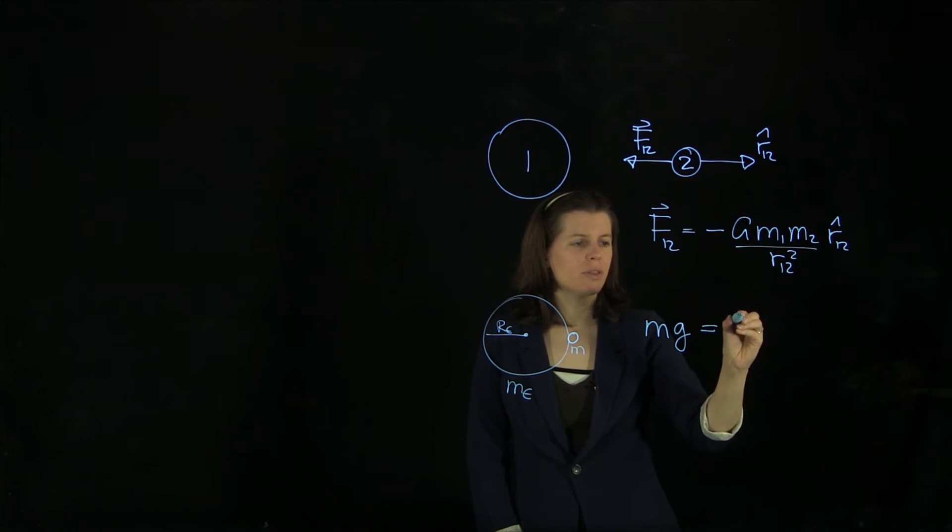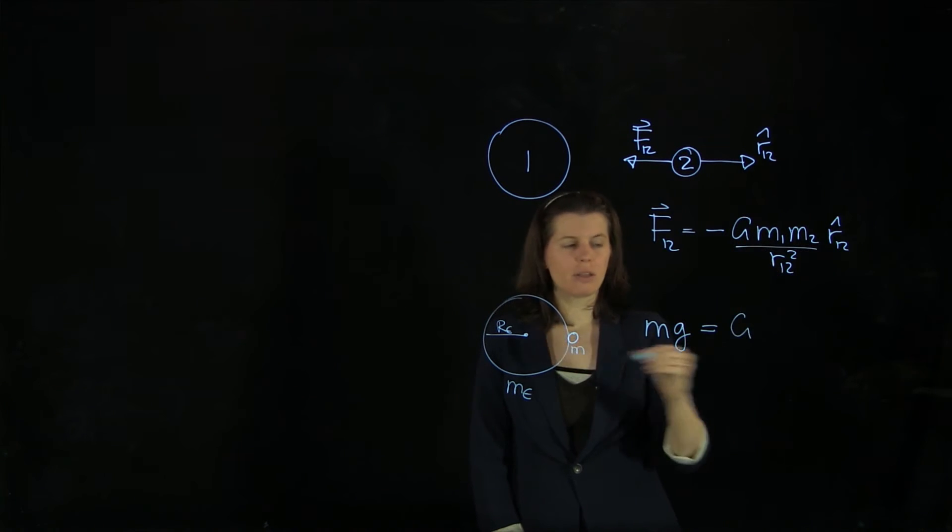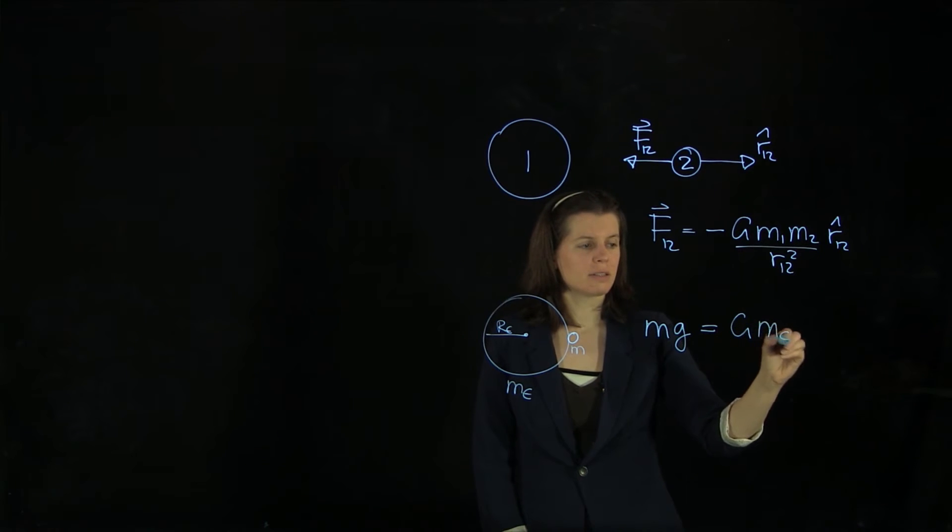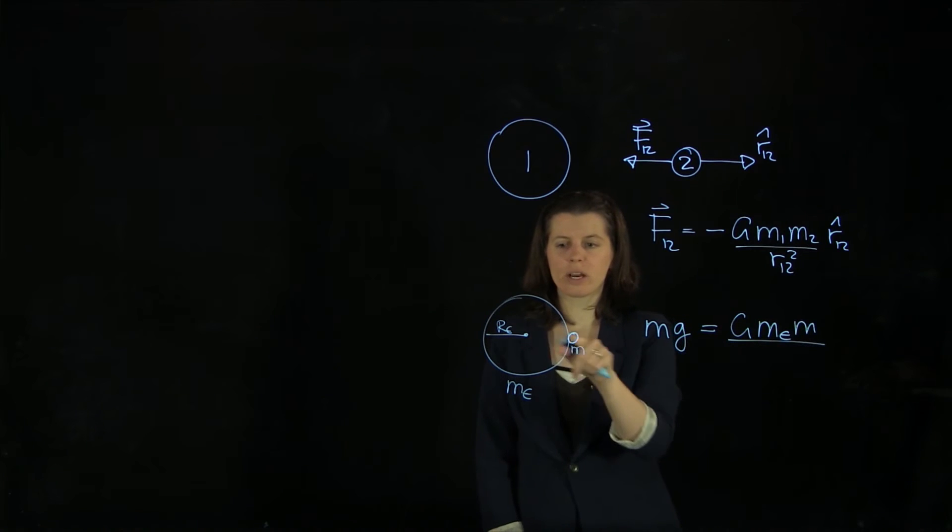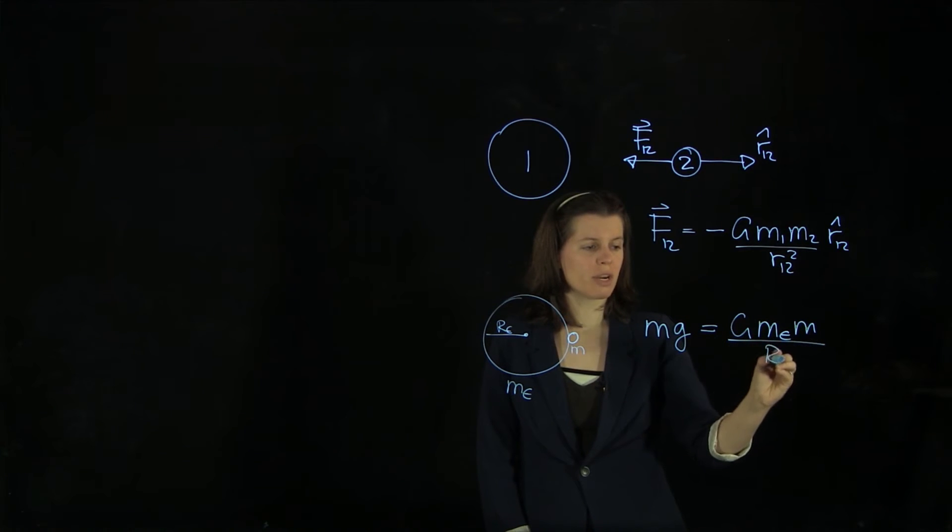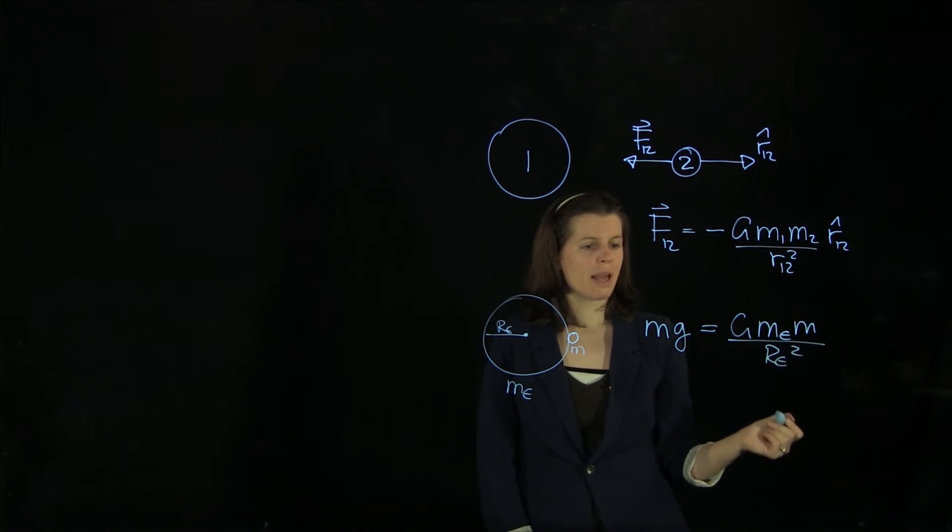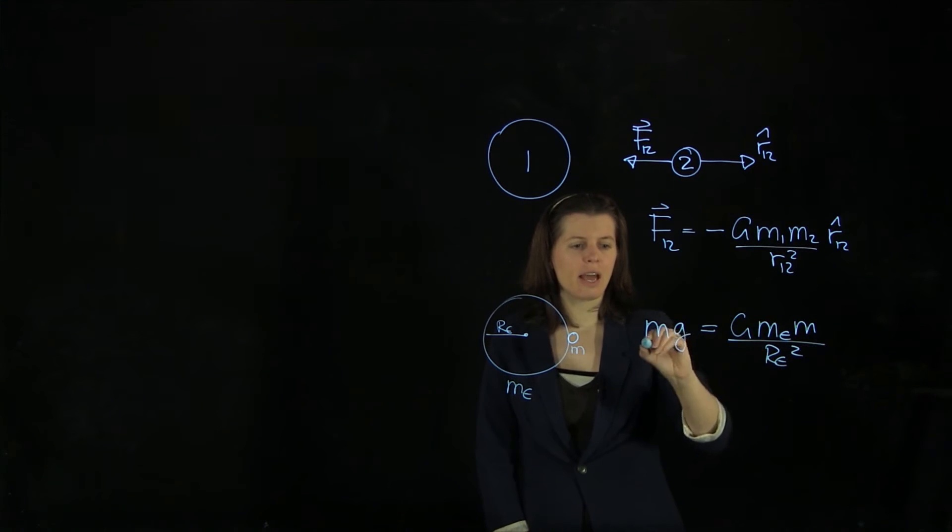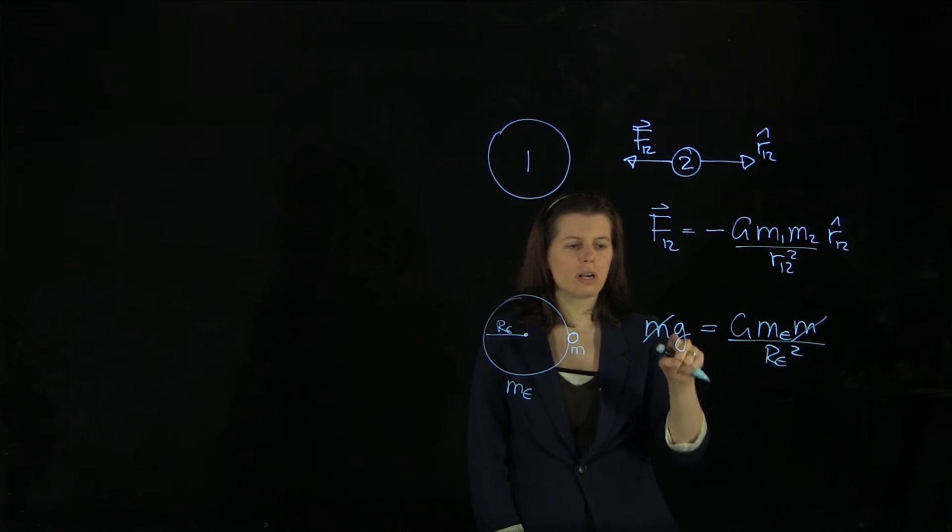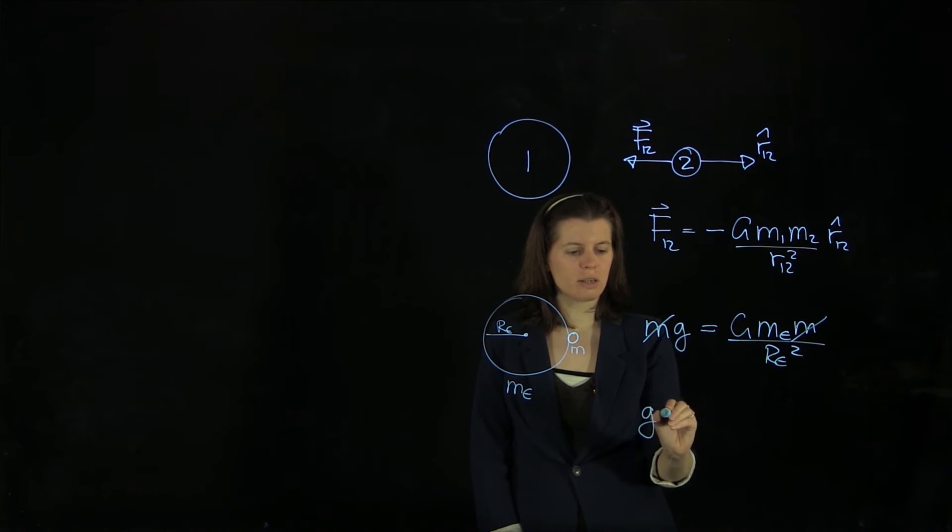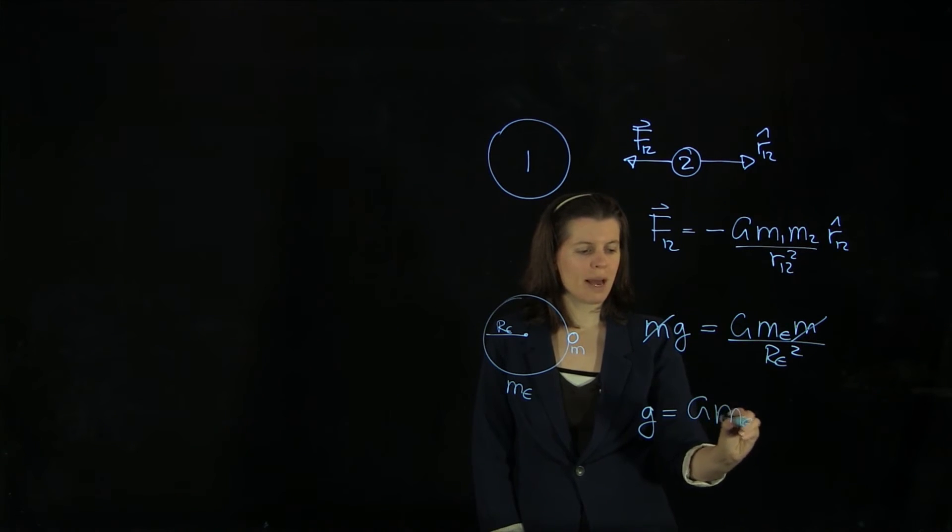So we can equate that with G, and then we have the Earth mass and the mass of the moon rock times the distance squared, so an Earth radius squared. And from that, we already see that we can cancel out the small m's of the moon rock, and we'll get to g here. So we can calculate the gravitational acceleration, which is capital G Earth mass over Earth radius squared.